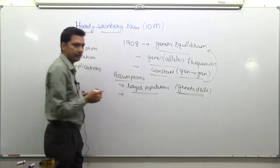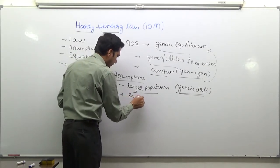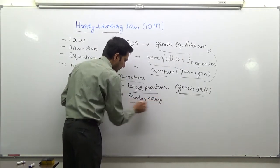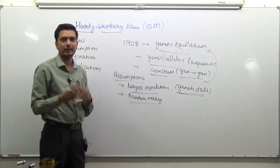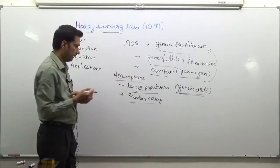The second assumption is population should be indulged in random mating. Otherwise, you are actually inclining towards certain characters, which will affect the frequencies that we are talking here.